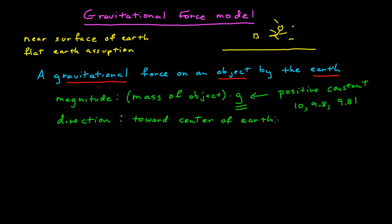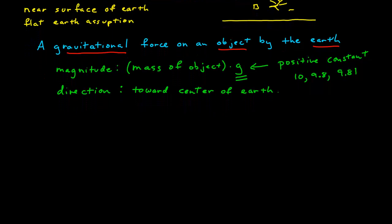The force is a vector, so you need both a magnitude and a direction. The direction of this force is toward the center of Earth. The gravitational force model does not involve any particular equation, and that's common in these sorts of models. If you're just hunting for equations, that's probably a mistake, because the mathematical representation depends on the specific situation and the coordinate system you would use. Let's do a couple easy examples to see how it works.